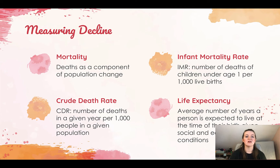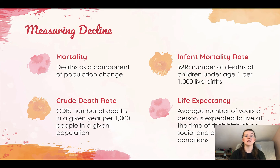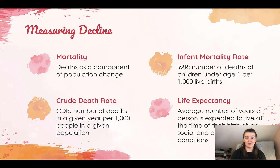Now the other side of the coin — measuring decline. Mortality refers to deaths as a component of population change. Crude death rate, or CDR, is the number of deaths in a given year per 1,000 people in a given population. Infant mortality rate, or IMR, is the number of deaths of children under age one per 1,000 live births — stillbirths, miscarriages, and abortions do not count. Life expectancy is the average number of years a person is expected to live at birth, given social and economic conditions.